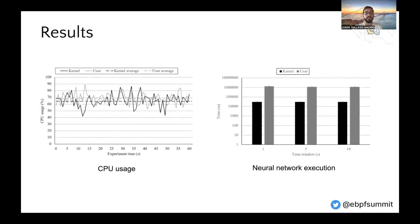Here you can see the two main outcomes of the experiments. On the left, you can see that although very similar, the CPU consumption using the in-kernel implementation is lower than the user space one. On the right, you can see the execution time of the neural network in both implementations depending on the time window chosen. There is a notable decrease in execution time when it is run in kernel space, because the code can run faster in this privileged context. We consider these results to be relevant as they show the advantages of executing complex tasks within the Linux kernel.